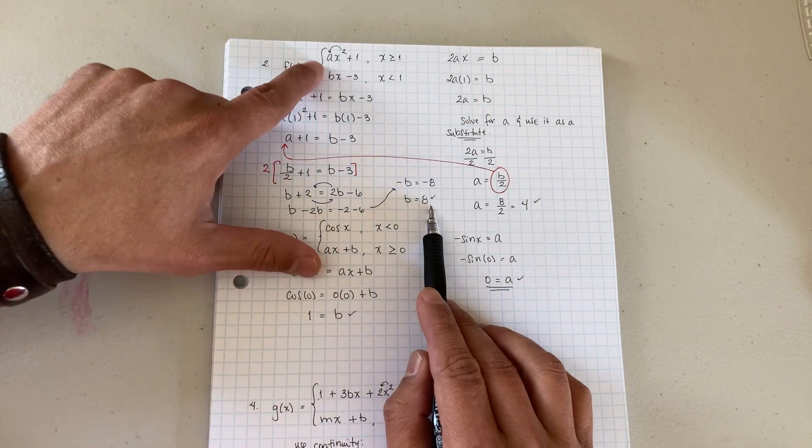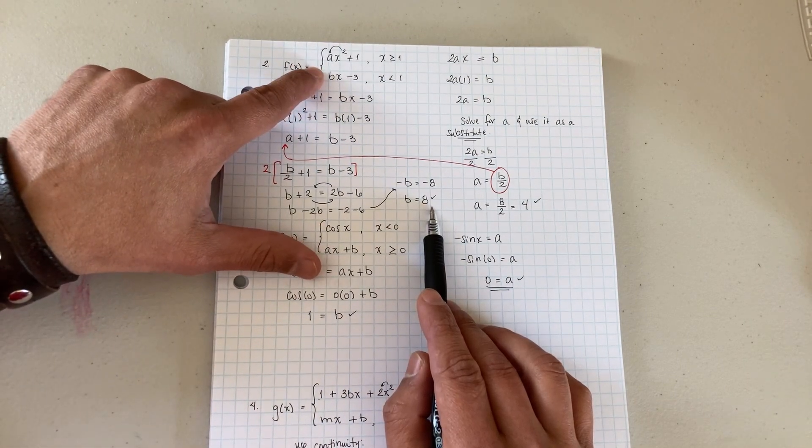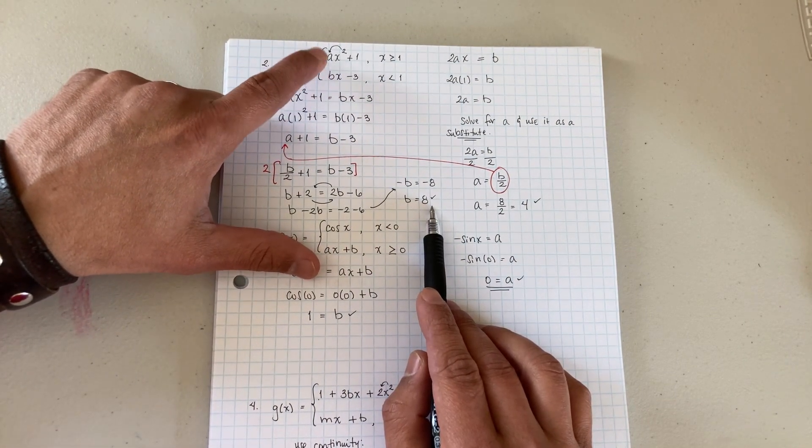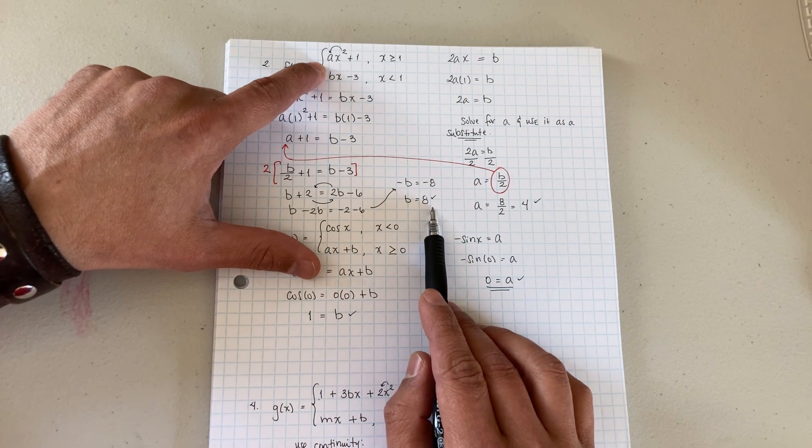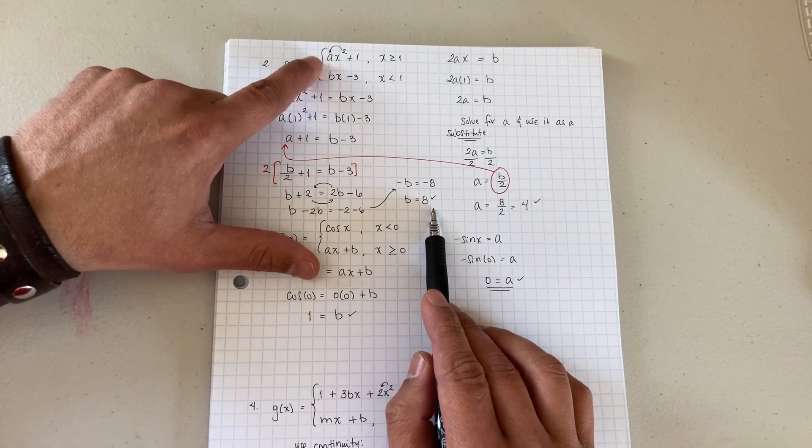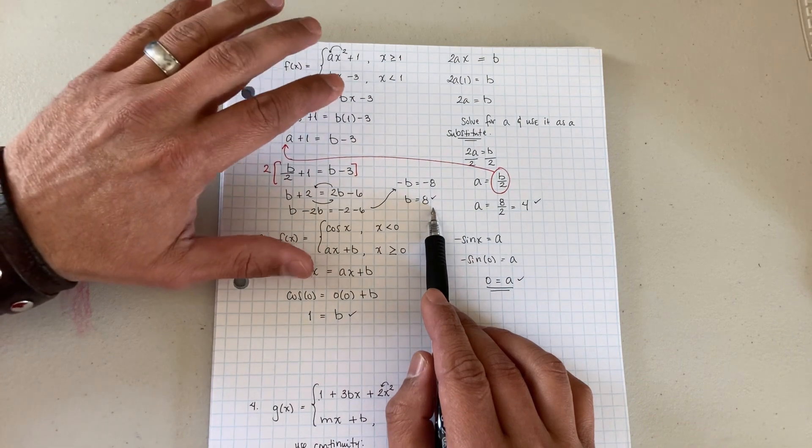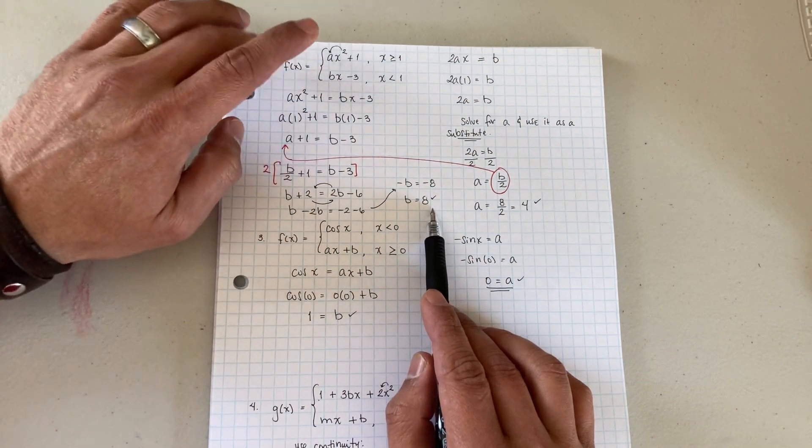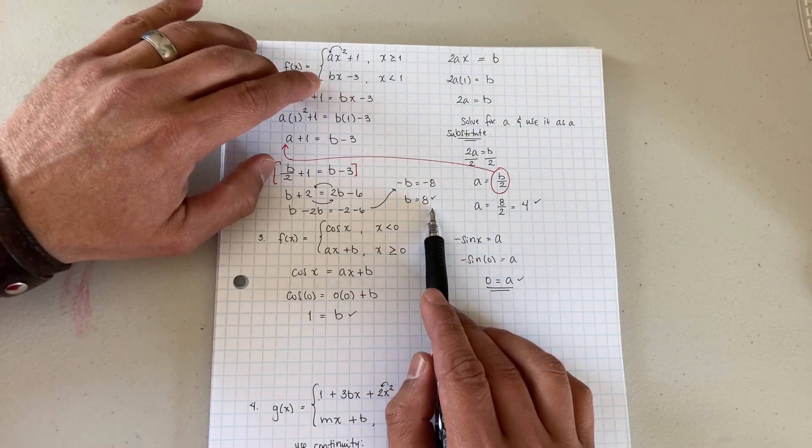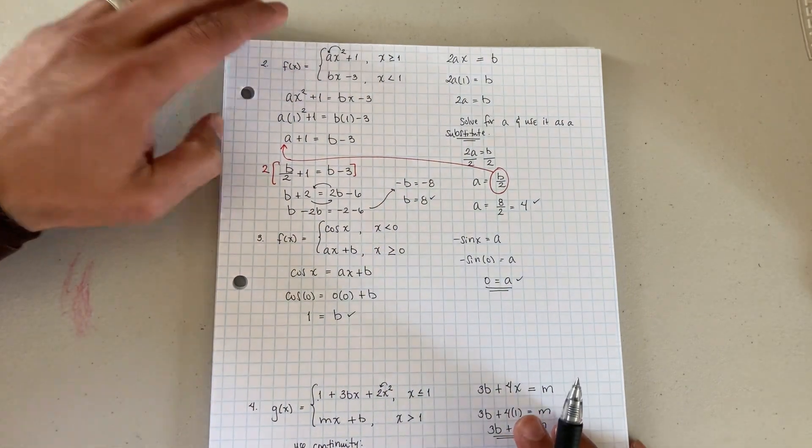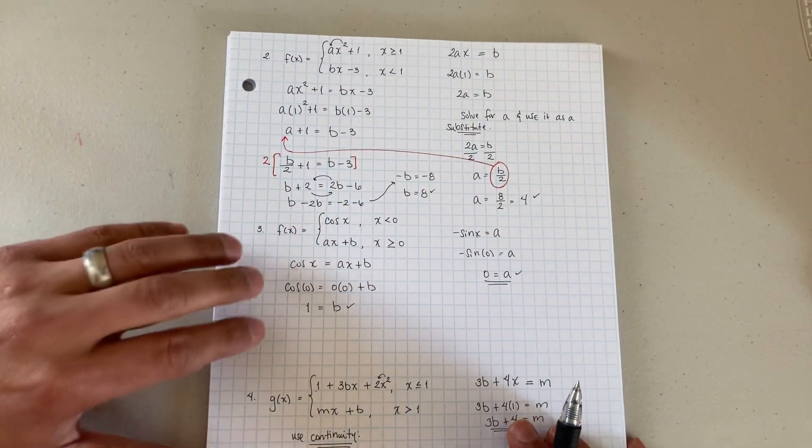And just solve it and you end up with b is equal to 8. But one thing I want you to see: for differentiability when they ask you this question, find the value, the missing value, that'll make it differentiable or continuous. But you notice how the most common one is differentiable. Usually they ask one on continuity and then they ask one for differentiability as well.